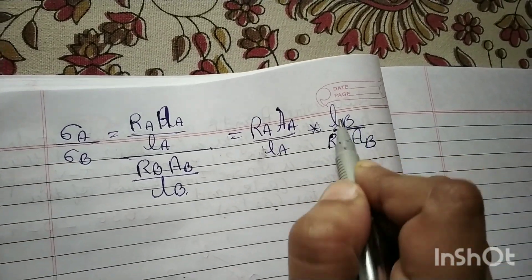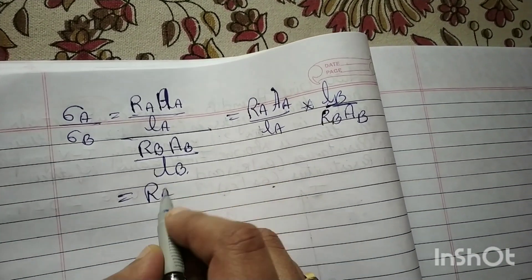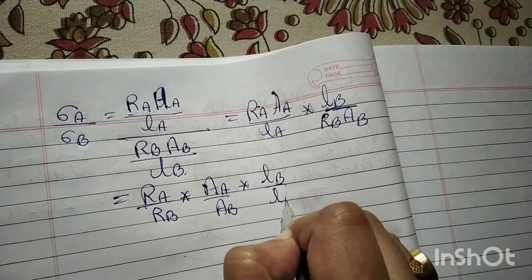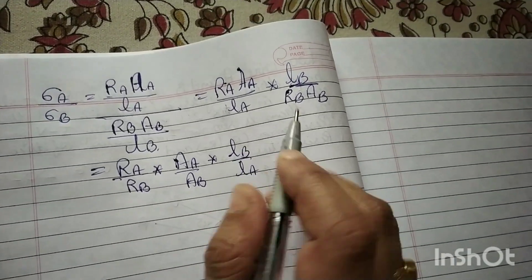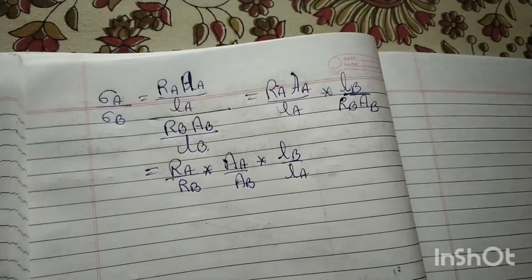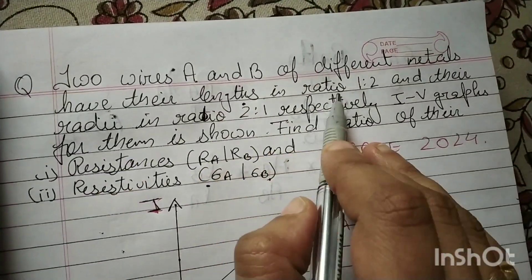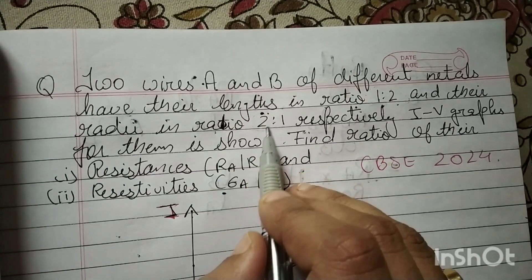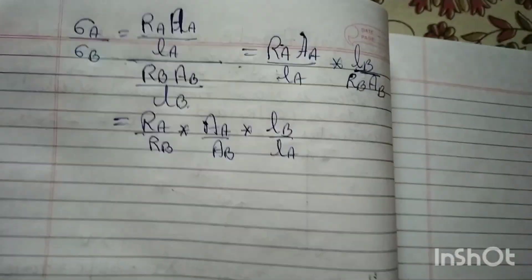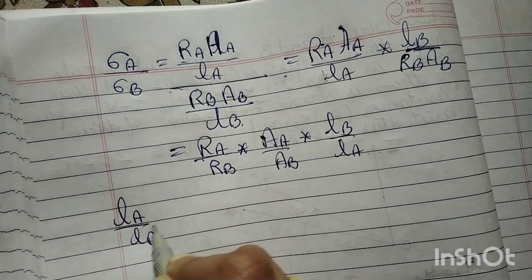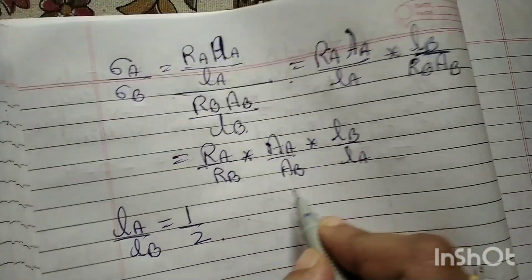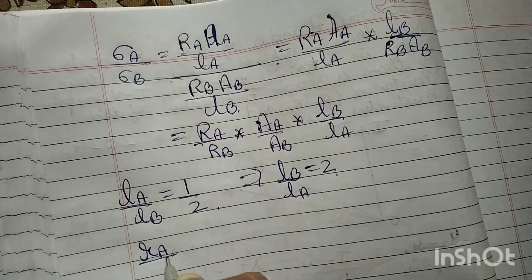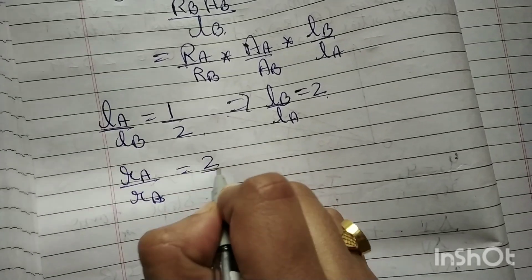Now let's find all the values. From the question, the lengths are given: LA over LB is in ratio 1 to 2, so LB over LA equals 2. Similarly, the radii are given: radius A to radius B is 2 to 1.